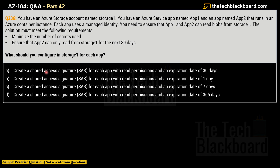Option A: create a shared access signature (SAS) for each app with read permissions and an expiration date of 30 days. Option B: create a SAS for each app with read permission and an expiration date of one day. Option C: create a SAS for each app with read permissions and an expiration date of 365 days. All options create a SAS with read permission — the differences are the expiration dates: 30 days, one day, seven days, and 365 days. The question requires 30 days.